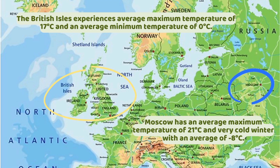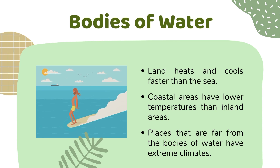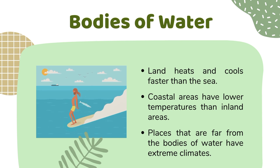The British Isles experiences an average maximum temperature of 17 degrees Celsius and an average minimum of 0 degrees Celsius. Moscow, on the other hand, has an average maximum of 21 degrees Celsius but a very cold winter averaging negative 8 degrees Celsius. Land heats and cools faster than the sea. Coastal areas have lower temperature ranges than inland areas, and places far from bodies of water have extreme climates.